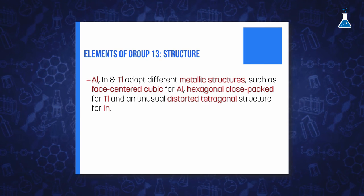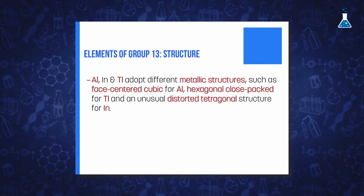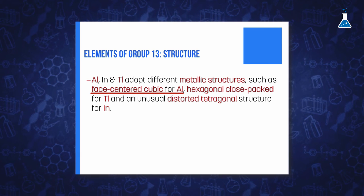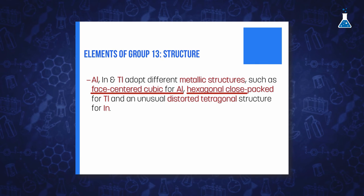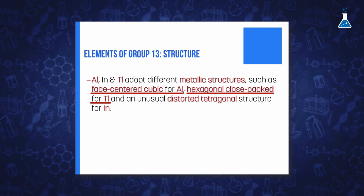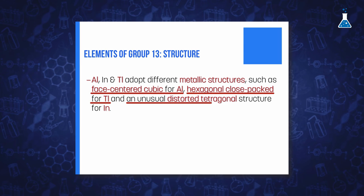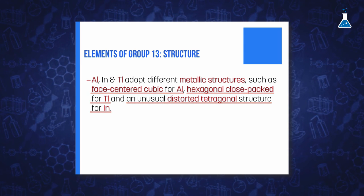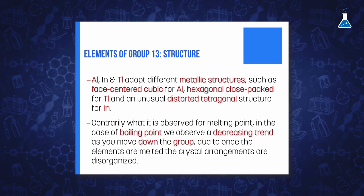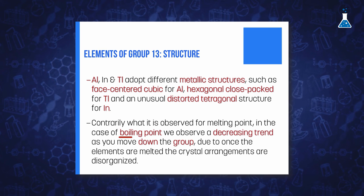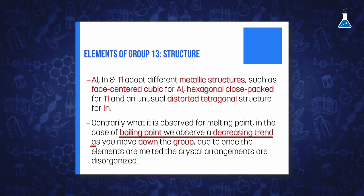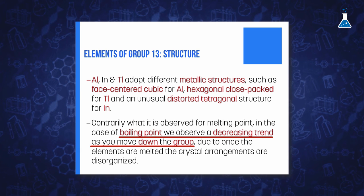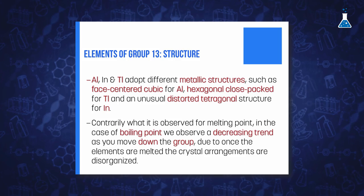Aluminium, indium, and thallium adopt different metallic structures, such as face-centered cubic in the case of aluminium, hexagonal close-packed for thallium, while indium adopts an unusual distorted tetragonal structure. Contrarily to what was described for melting points, in the case of boiling points, a decreasing trend is observed as the mass of the element increases, given the fact that once the elements are melted and the crystal arrangement is disorganized, the metallic bonds become weaker.